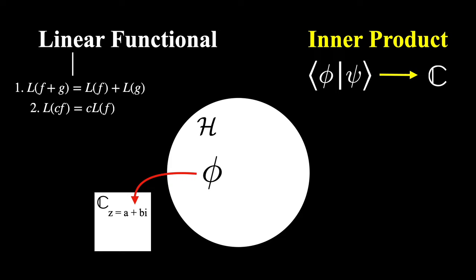Now these could be maps of any kind as long as they are linear. A couple examples would be the zero map, which sends all functions to the number zero, or the integral map, which sends all integrable functions to their integral over a specific domain.